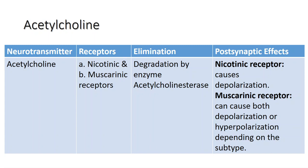The cholinergic system has two types of receptors: the nicotinic and the muscarinic. These are named for the drugs that interact with the cholinergic receptor in addition to acetylcholine. Nicotine will bind to the nicotinic receptor and activate it. Muscarin, a product of certain toxic mushrooms, will bind to the muscarinic receptor.